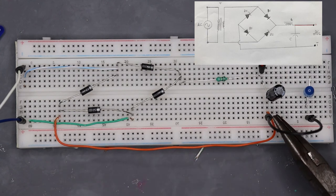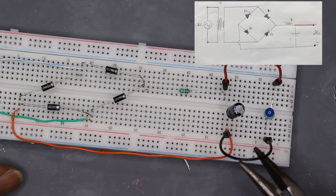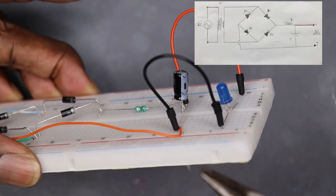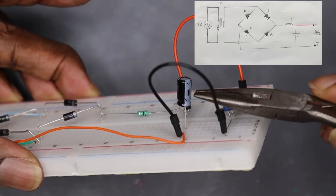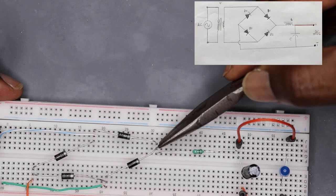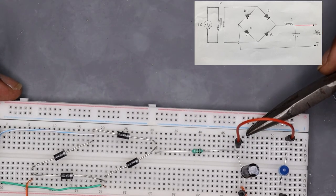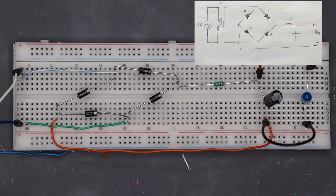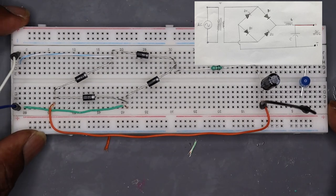And the cathode-cathode of D4 and D3 is connected to the negative end of the capacitor. The cathode of D1 and the cathode of D2 is connected to the coil, coil to the positive end of the capacitor, and the output.